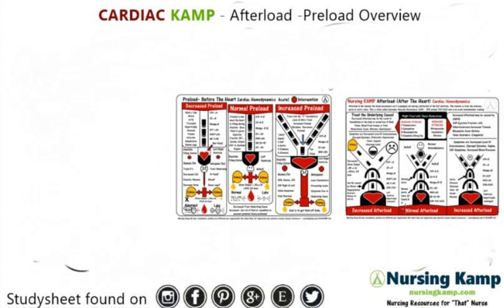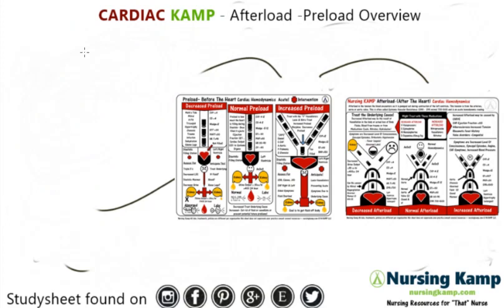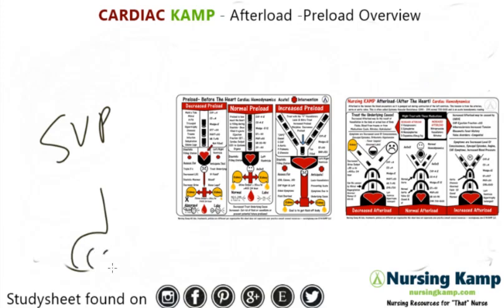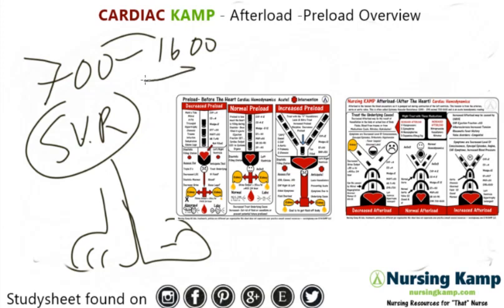Heart rate is always going to be elevated because it's reacting to the problems going on. Systemic vascular resistance — SVR — indicates peripheral vascular status, like the fingers and toes. I turn the V sideways to get a 7, giving me the range of 700 to 1600. At 1600 it's really squeezed — vasoconstriction — and at 700 it's dilated.